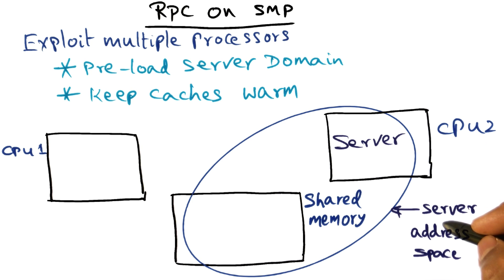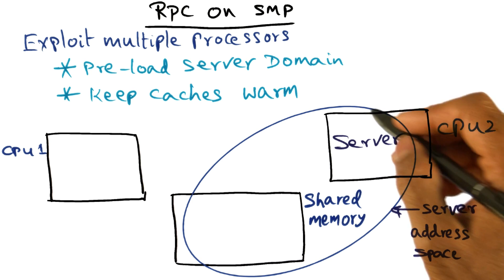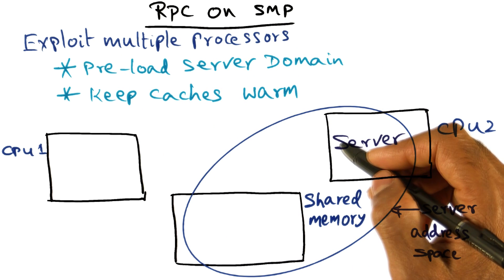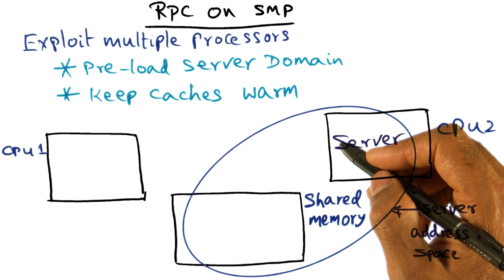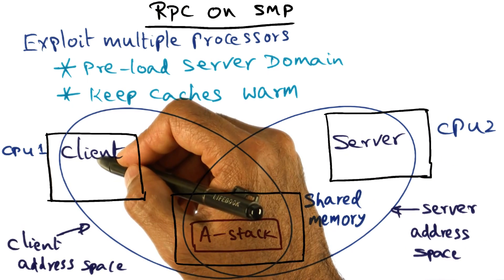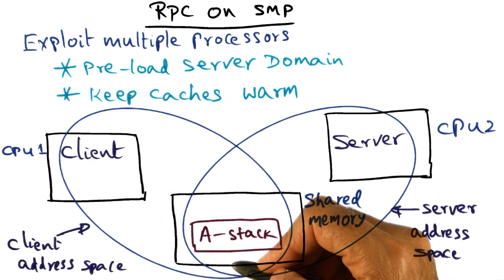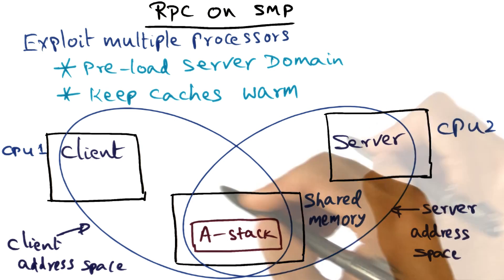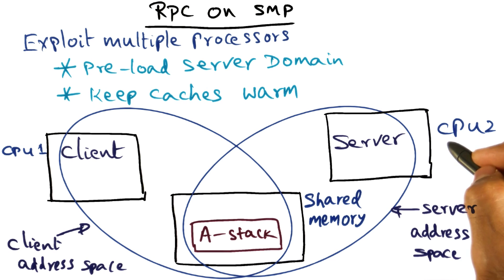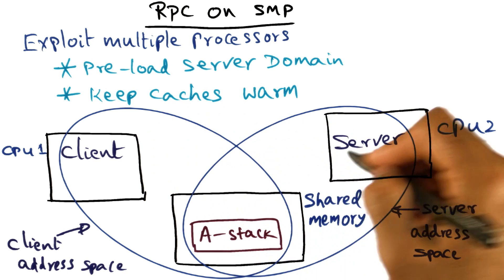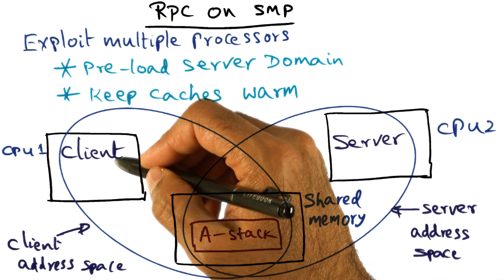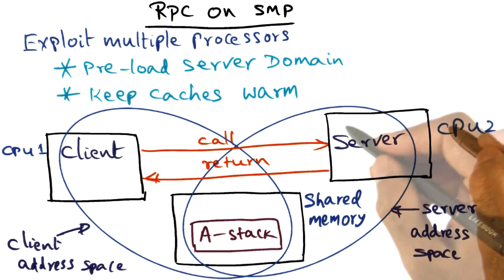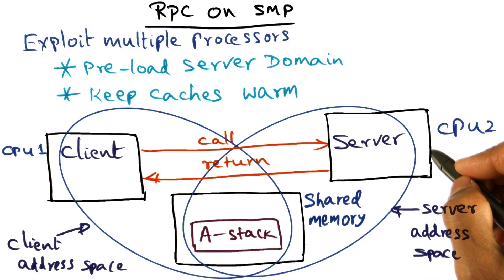In other words, the server's address space is preloaded in a particular processor if you have multiple processors, and you can exploit the fact that you have multiple processors in the SMP. So if a client comes along and wants to make an RPC call, we want to use the server that has been preloaded in a particular CPU as the recipient of that RPC call.